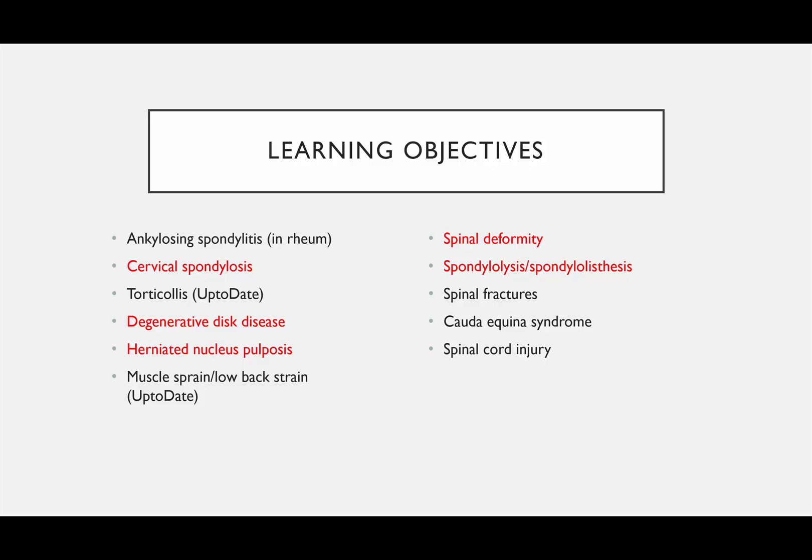Here are the topics for spine. Ankylosing spondylitis is an inflammatory condition covered in the rheumatology portion. Cervical spondylosis will be covered in this lecture. Torticollis is left to the reading assignments. We'll cover degenerative disc disease, herniated nucleus pulposus, and also spinal deformity, spondylolysis, and spondylolisthesis. Fractures, cauda equina syndrome, spinal cord injury, and infection will be covered in Spine 2.